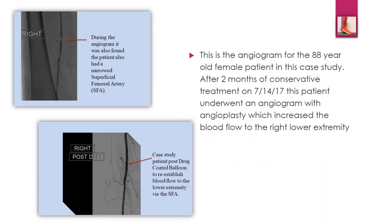Her treatment began in May. By the time we hit that two-month limit of conservative treatment on July 14th, she decided it was time to find out what was causing this — she was tired of coming to the wound center after two months, and she had a lot of comorbidities. We referred her to the vascular surgeon, who performed an angiogram. The angiogram demonstrated that she had a narrowed blockage in her superficial femoral artery up in her thigh. Once a drug-coated balloon was placed, it reestablished flow all the way down to her lower extremity, and it took no time at all to finish healing her up.